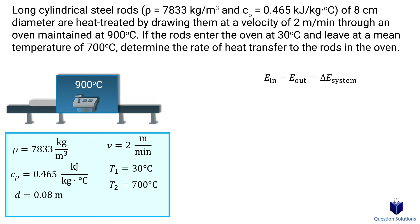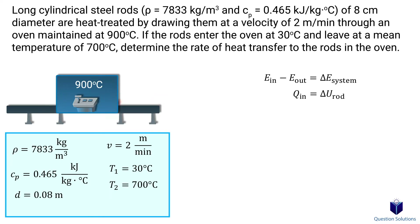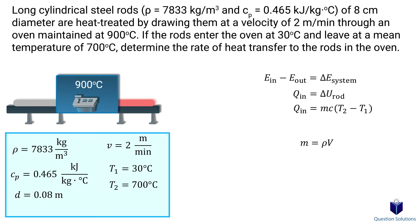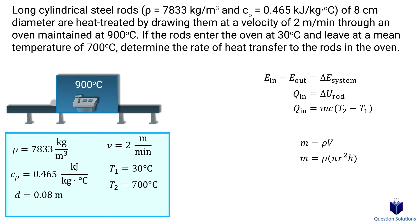Let's start with our energy balance equation. Energy in minus energy out equals the change in energy of the system. The energy going in is heat input, there is no energy loss, and that equals the change in internal energy. We can figure out the internal energy change using the mc-delta-T equation. We need the mass, which is density times volume. To find the volume, we use the formula for the volume of a cylinder. We look at a time period of 1 minute, so the length of rod traveling through the oven is 2 meters.